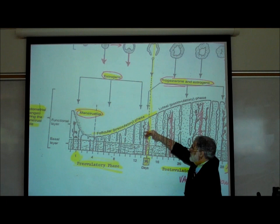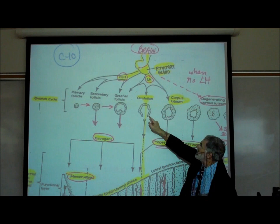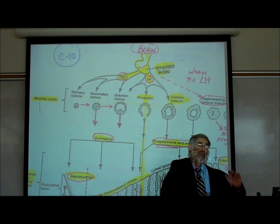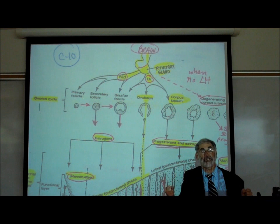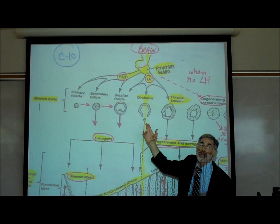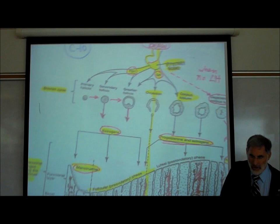Under the influence of estrogen, there is some thickening of the endometrial lining. Around day 14, following the dashed line up, we see ovulation — the egg popping out caused by LH. The pituitary starts secreting LH, the LH level rises — they call that an LH surge — and this surge in LH levels in the bloodstream is what causes the egg to pop out.